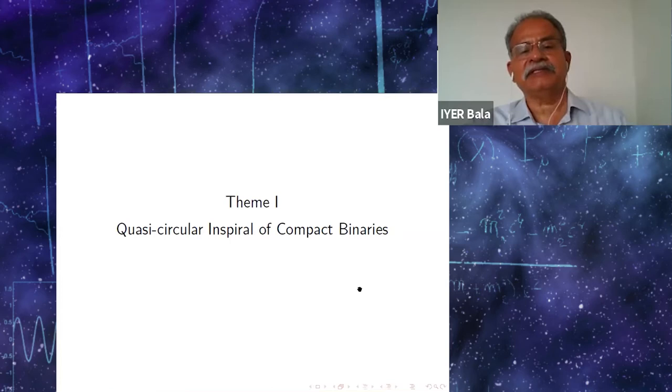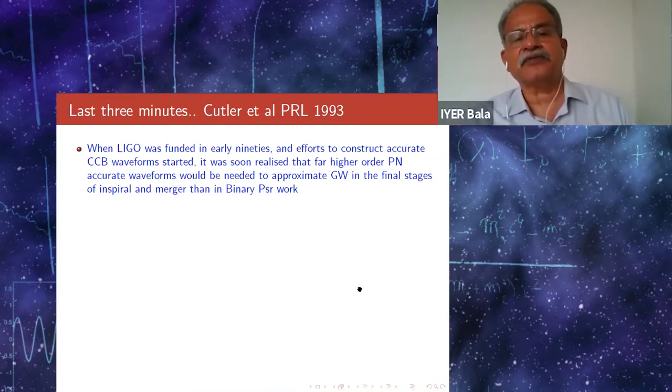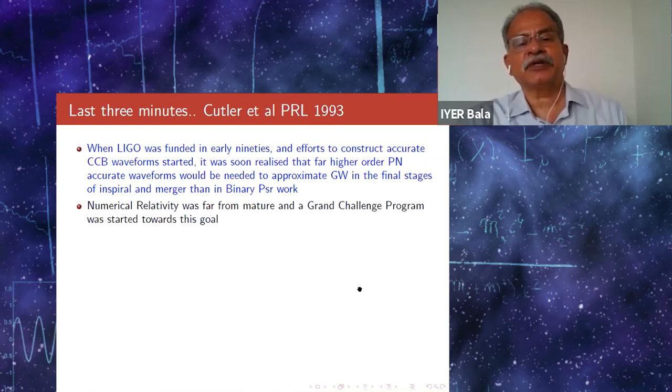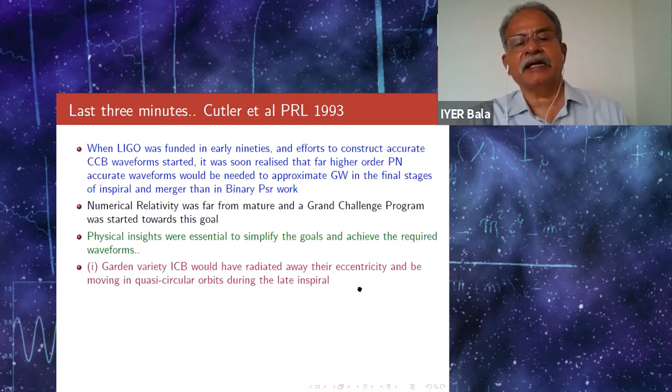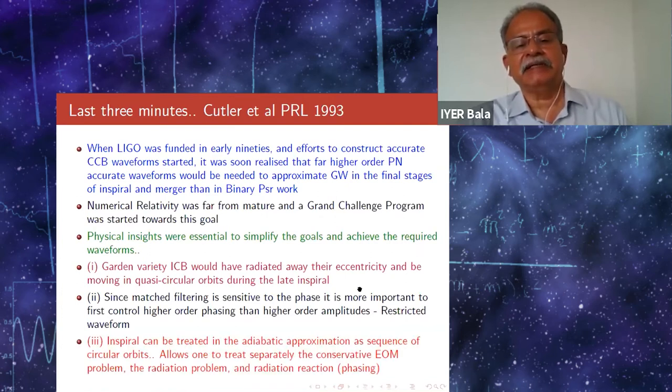I now come to Theme 1, in which I collaborated with Thibaut and with Luc. When LIGO was funded in the early 90s and efforts to construct accurate coalescing compact binary waveforms started, it was soon realized that far higher-order PN accurate waveforms would be needed. Physical insights were essential to simplify the goals and achieve the required waveforms. For instance, the garden variety inspiraling compact binary would have radiated away their eccentricity and be moving in quasi-circular orbits. Since matched filtering is sensitive to the phase, it's more important to first control phasing rather than the amplitudes. Inspiral can be treated in the adiabatic approximation as a sequence of circular orbits.